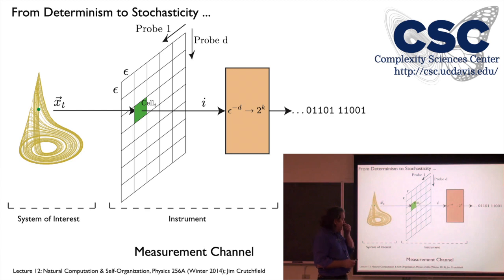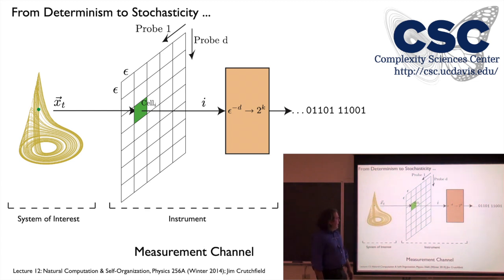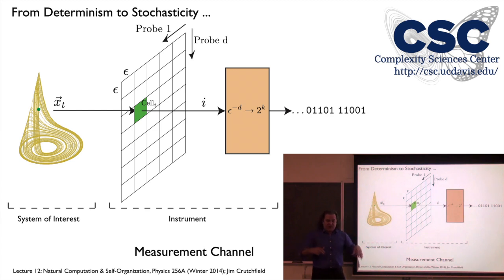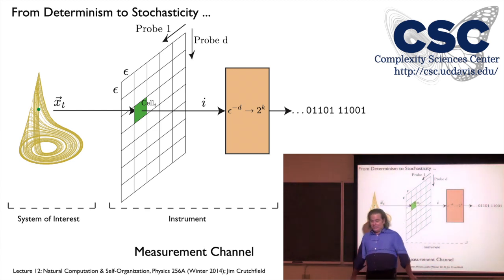So what do we mean by measurement? Here's a cartoon picture — a more detailed picture of our roadmap. Here is Mother Nature in all of her high-dimensional but hidden and mysterious glory. We have this conception that at each moment in time the system is in some configuration, and over the next instant in continuous time, the state evolves. Our interface to nature is through some kind of device — call it an instrument — and there are a couple of fairly basic things about instruments.